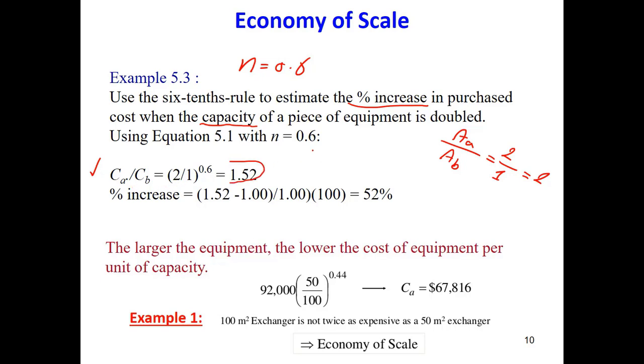So before it was 1, when the capacity was the same. If you put the capacity 1 here, 1 over 1, gives you CA over CB. Before that the capacity was the same, so this ratio was 1. Now this ratio is 1.52.